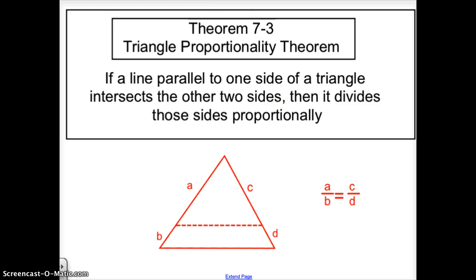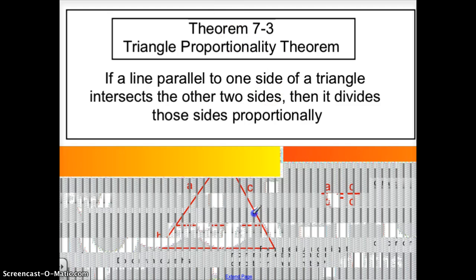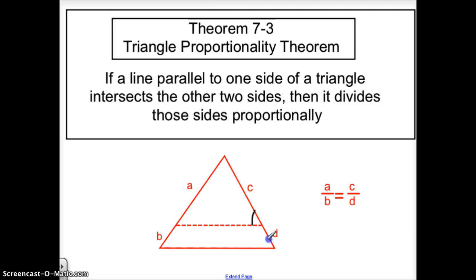Usually before, we would then have to prove, first of all, that the angles were congruent here and here to then say it's angle-angle or something like that. Now, as long as we know that this auxiliary line is parallel to the bottom here, then we also know that CD and AB are proportionally divided.